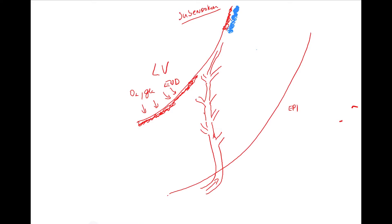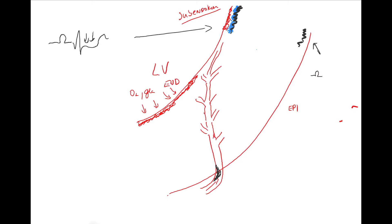It means that when I have ischemia, the first area affected is the sub-endocardium. And one very simple rule: if I have problems close to the endocardium, I will have ST depression. If I have problems in the area of the epicardium, I will have an ST elevation.